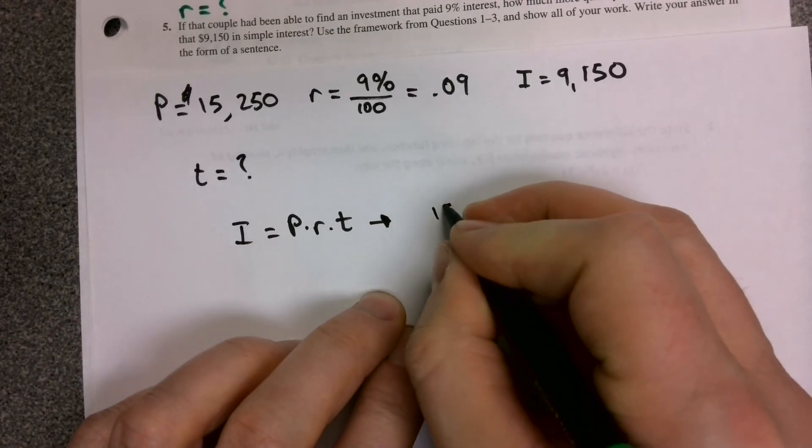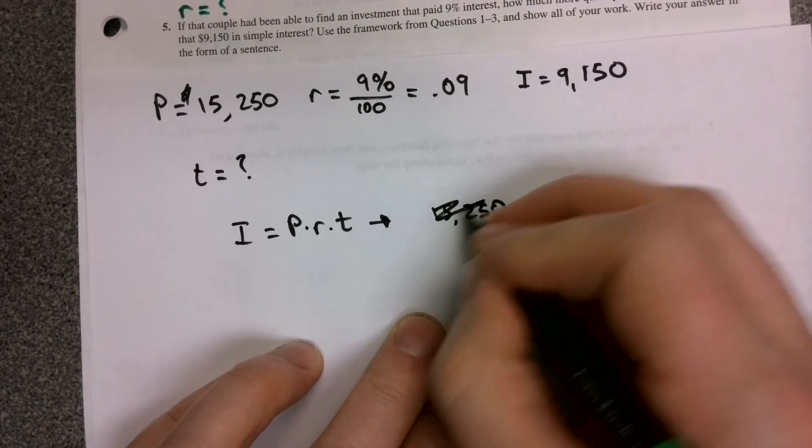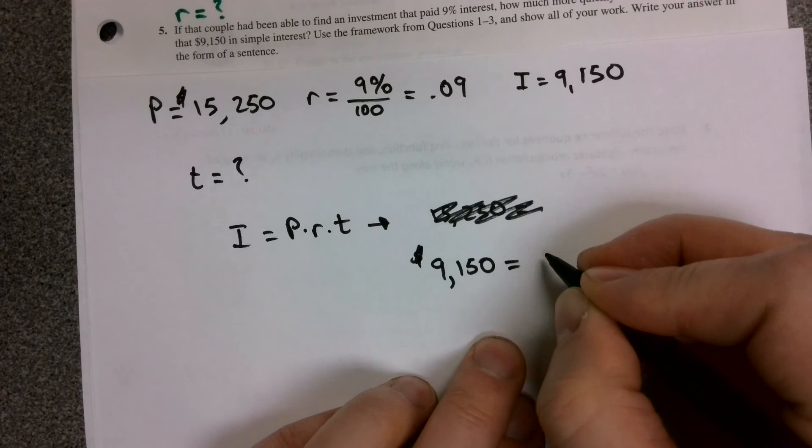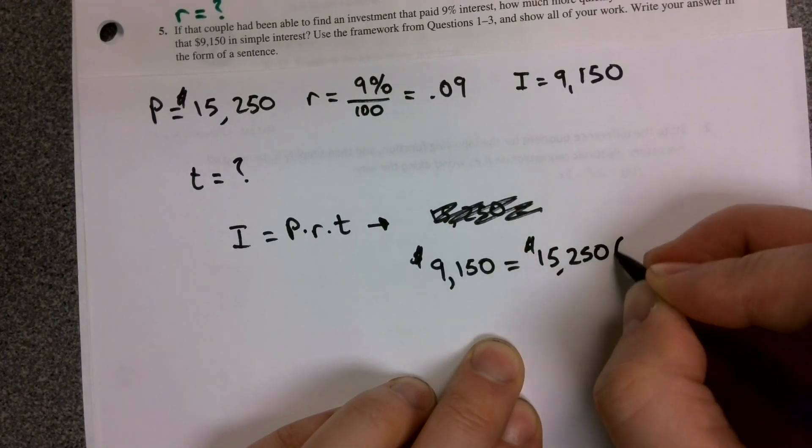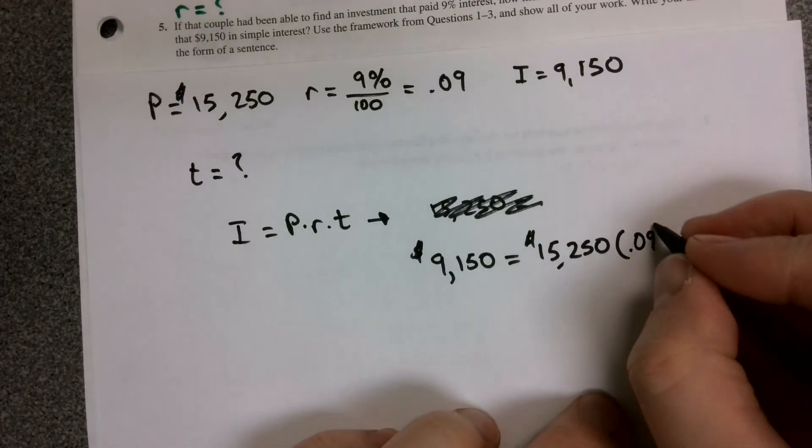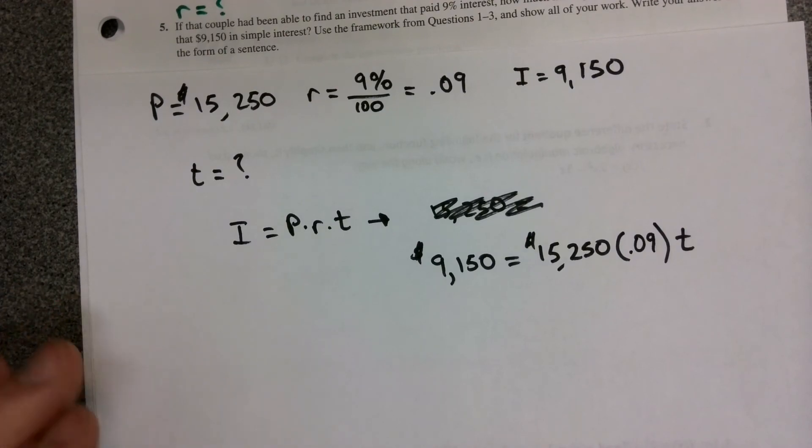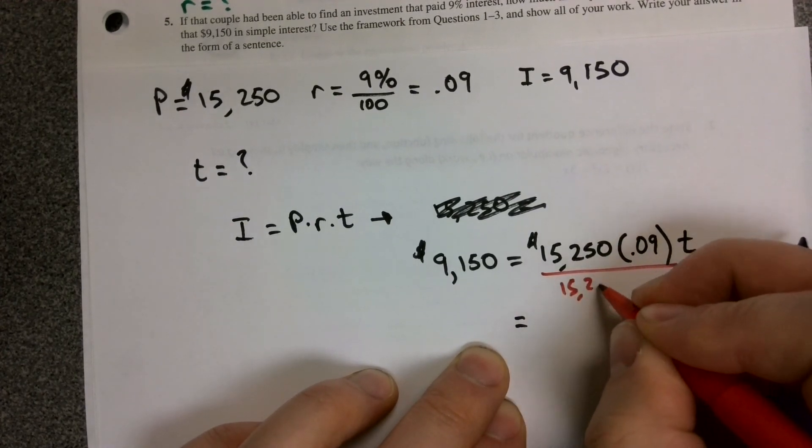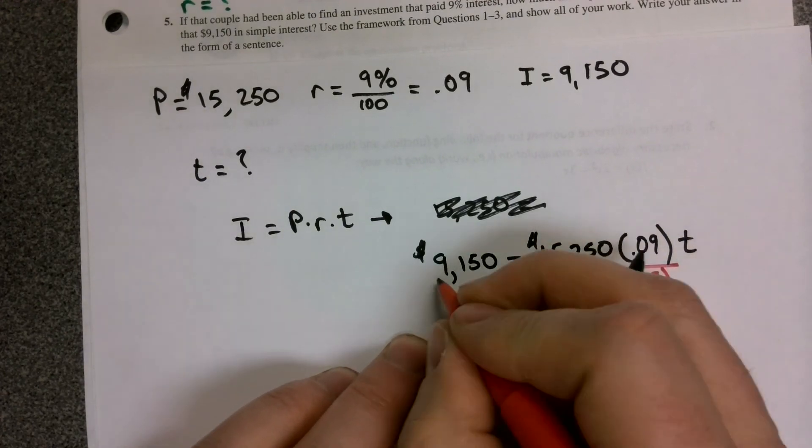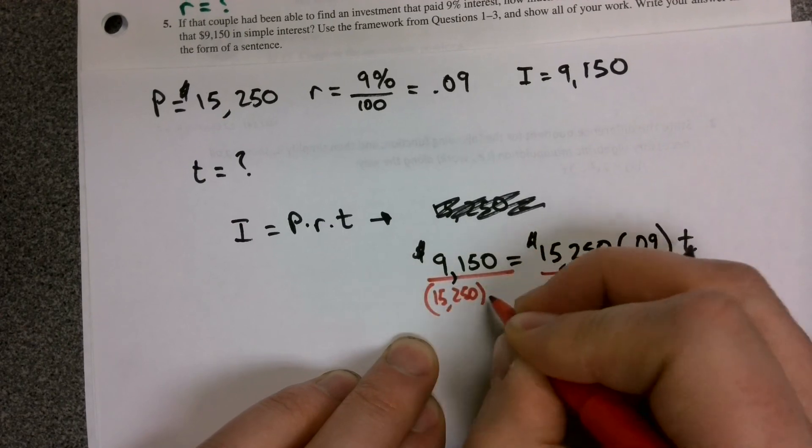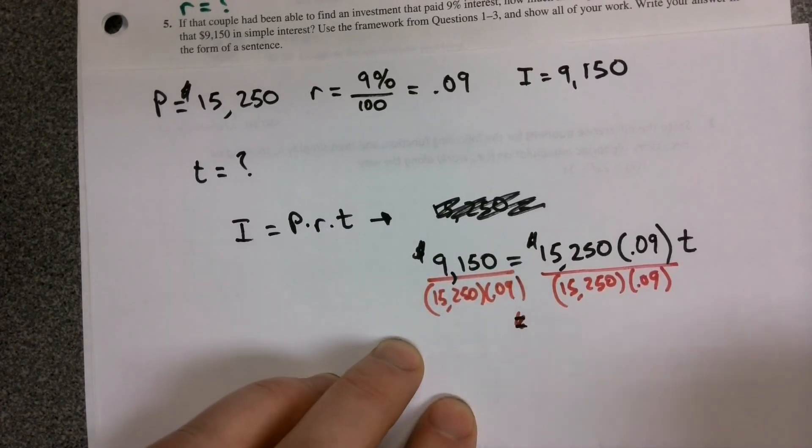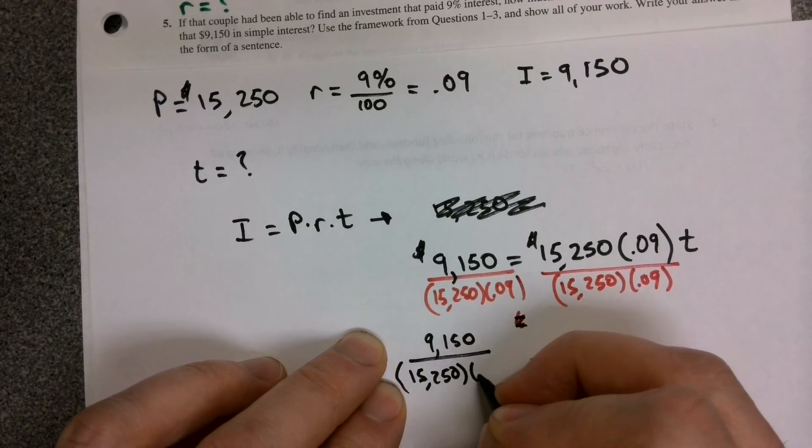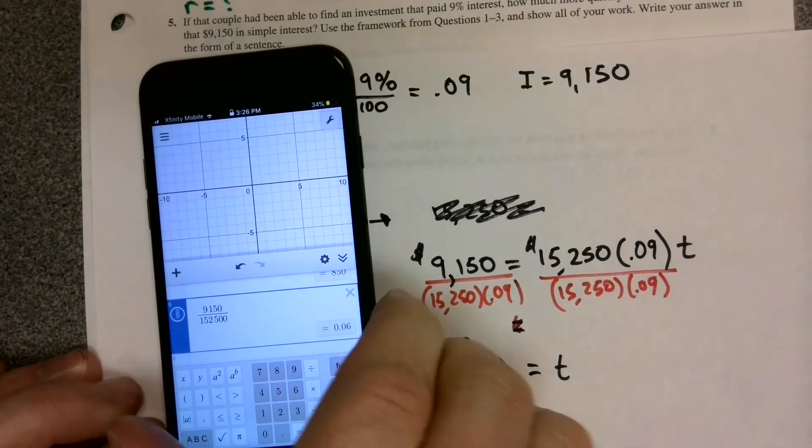The formula is the same: interest equals principle times rate times time. This time we do not know the time, but we know the other three pieces. So 9,150 equals 15,250 times that new interest rate, that better interest rate of 0.09, times the time. And now we're going to solve for T. I'm just going to divide both sides by 15,250 times 0.09. So our time will equal 9,150 divided by 15,250 times 0.09.